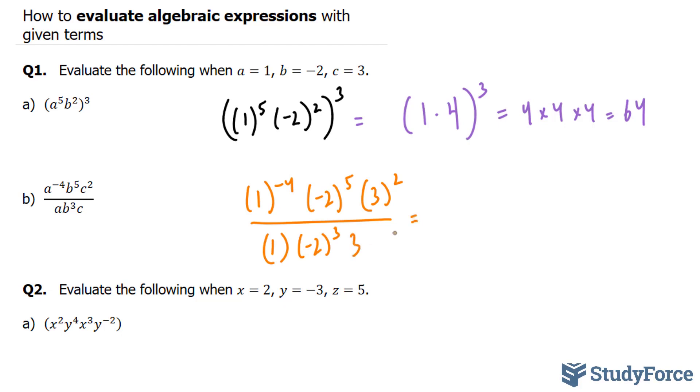And now we will evaluate the following expression. But before we do that, just keep in mind that you could have used the laws of exponents to simplify this. And if you had done that, this is what it would look like. You would have a to the power of negative 4 over a, which would give you a to the power of negative 5. b to the power of 5 over b to the power of 3 would give you b to the power of 2. And this, c to the power of 2 over c, would just give you c.